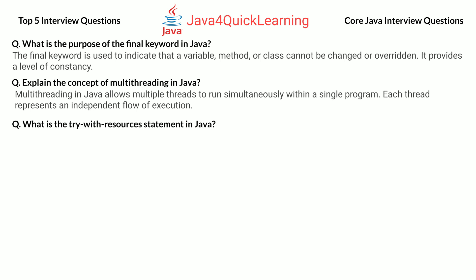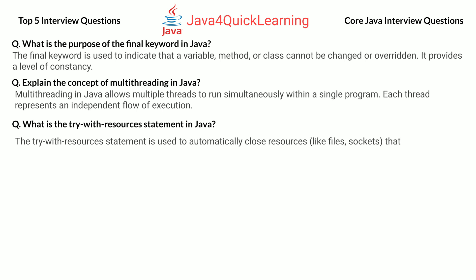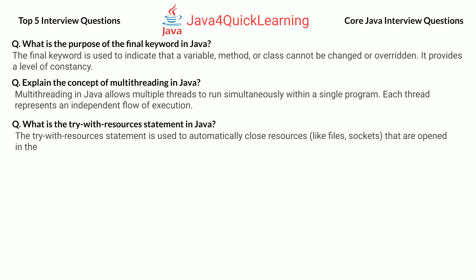What is the try-with-resources statement in Java? The try-with-resources statement is used to automatically close resources, like files and sockets, that are opened in the try block. It ensures that each resource is closed at the end of the statement.